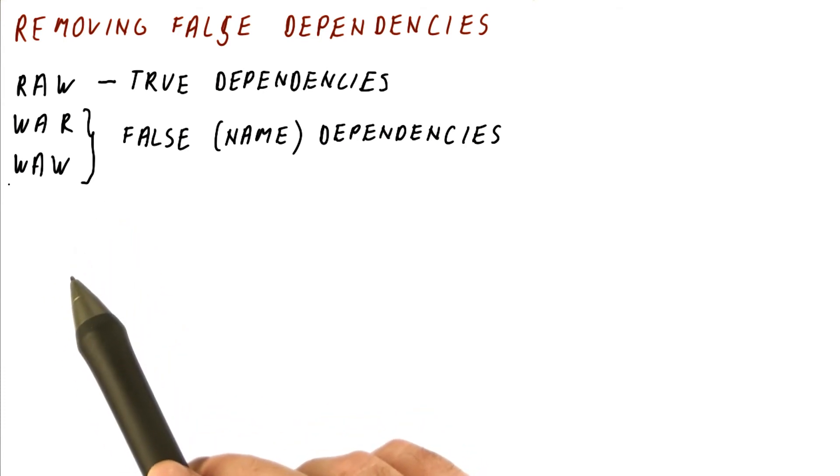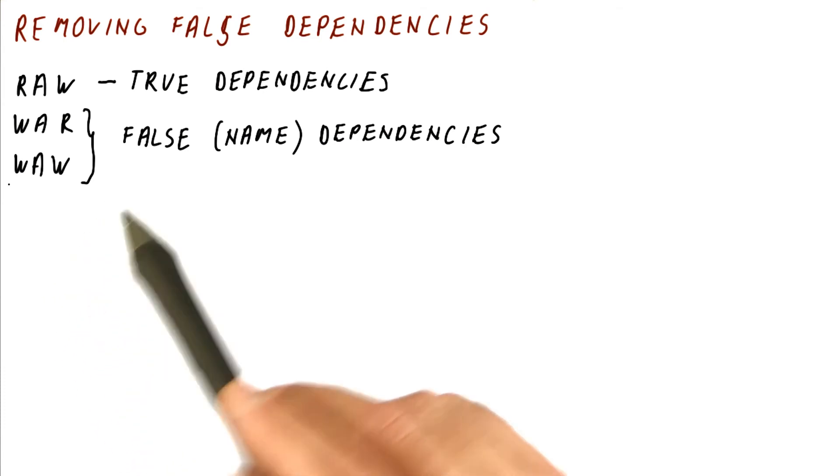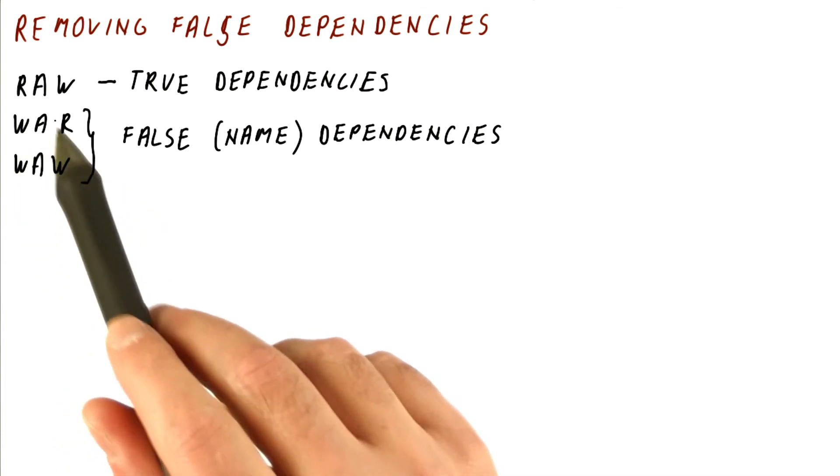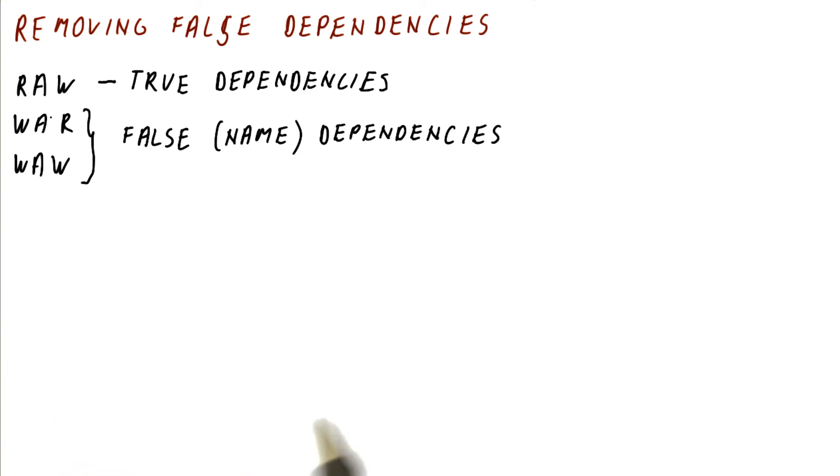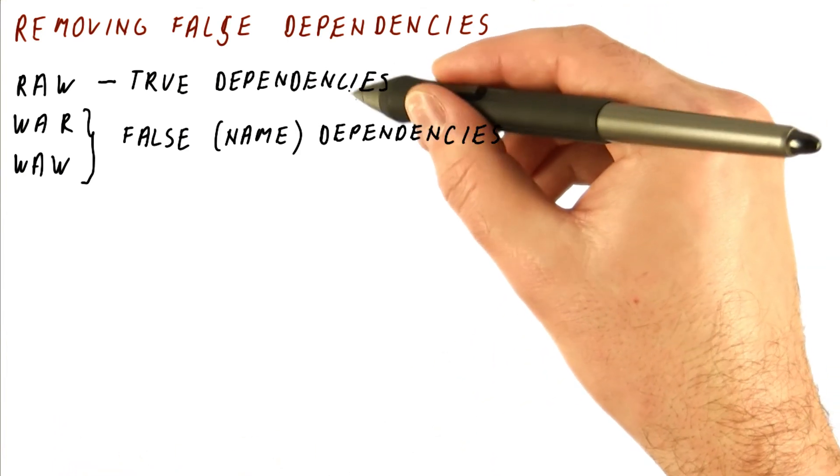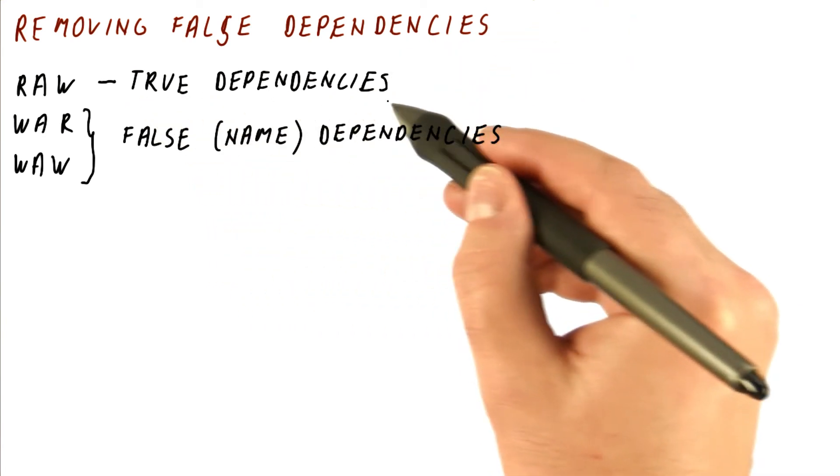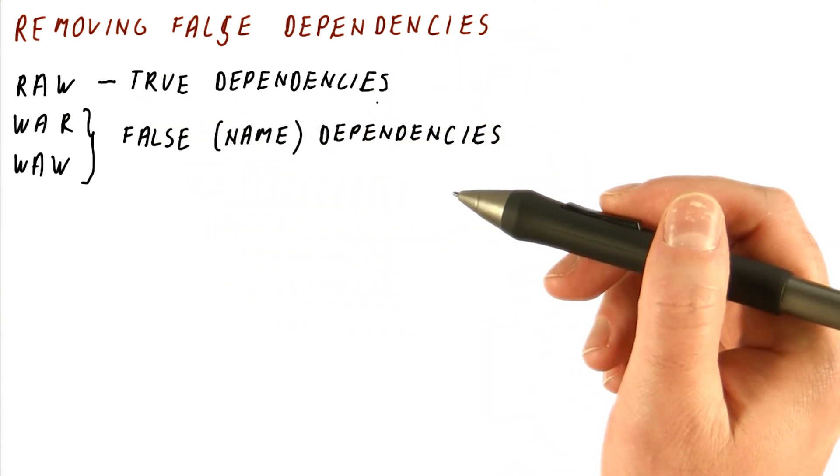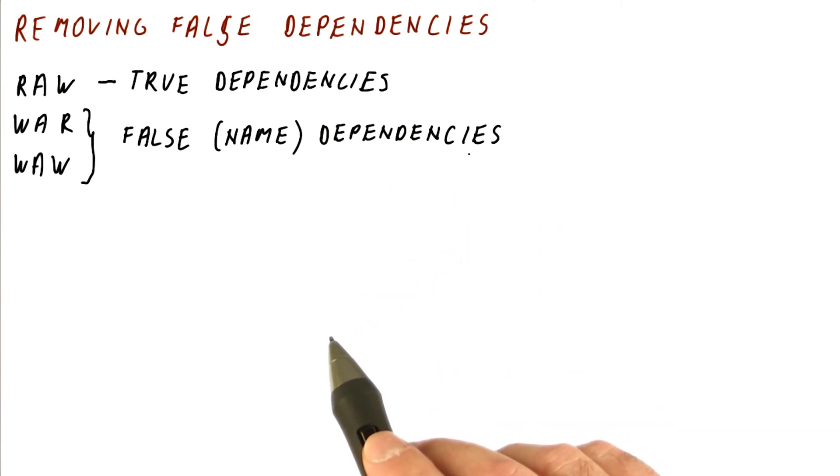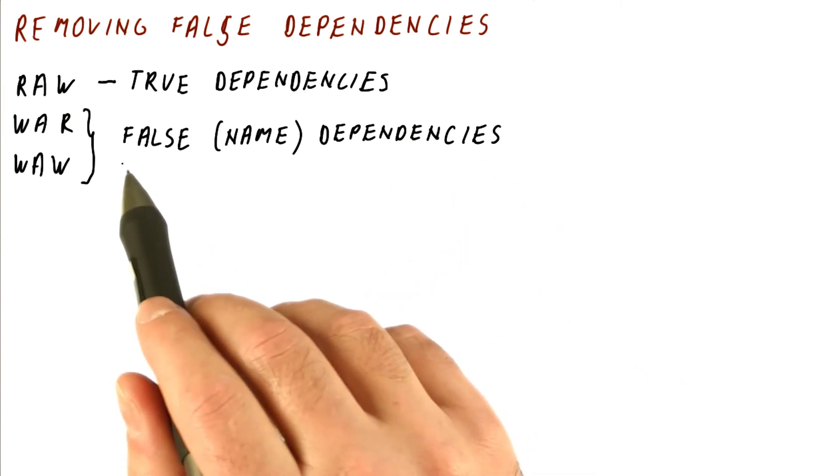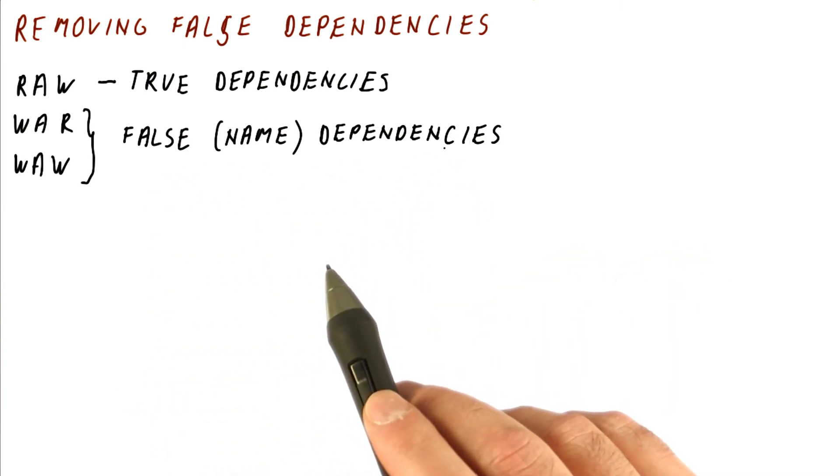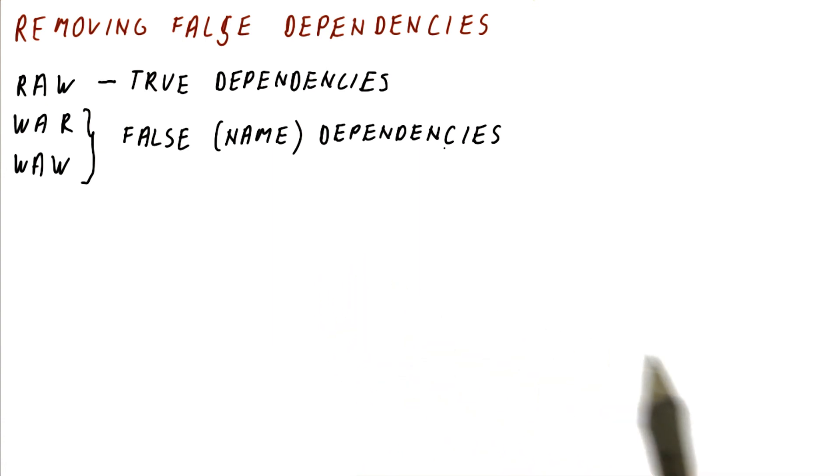If the second of those two instructions were using another register to write this value, then there would be no dependence. We will see an example of this a little bit later. But the idea is that while true dependencies, you actually have to delay instructions in order to satisfy them, with the name dependencies, you could actually execute instructions earlier if only you could take care of multiple values for the same register as we will see just in a couple of seconds.